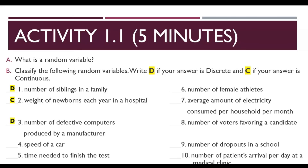Number 4: Speed of a car. You cannot count it, but you can measure the speed of a car, therefore the variable is continuous. Number 5: Time needed to finish the test. You cannot count time, but you can measure it, therefore it is C — continuous. Number 6: Number of female athletes. You can count it, therefore it is D — discrete.